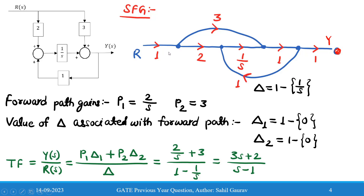Now we find the forward path gains. There are two forward paths, P1 and P2. P1 is the direct path: 1 × 2 × (1/s) × 1 × 1 = 2/s. P2 is the second forward path where the 2 and 1/s are bypassed: 1 × 3 × 1 × 1 = 3. Since the loop 1/s is touching both forward paths, delta_1 and delta_2 are both equal to 1.